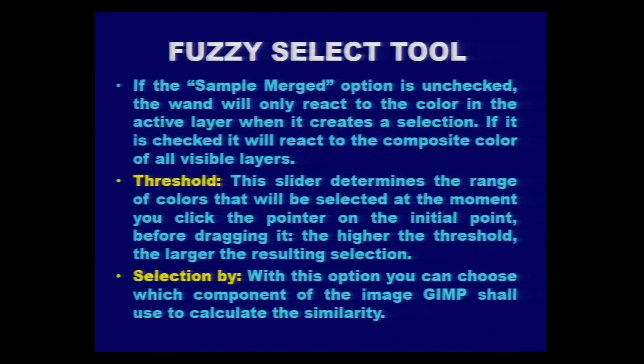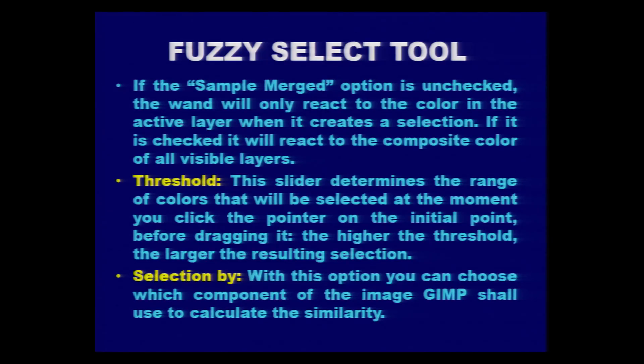The Threshold slider determines the range of colors that will be selected at the moment you click at some initial point. If it is set to 15, as per that threshold limit it will pick all pixels of similar color to the one initially clicked. If you feel the range of pixels selected is too few, you can increase or decrease the threshold limit. Another option available is 'Selection By,' which lets you choose which image component GIMP shall use to calculate similarity.